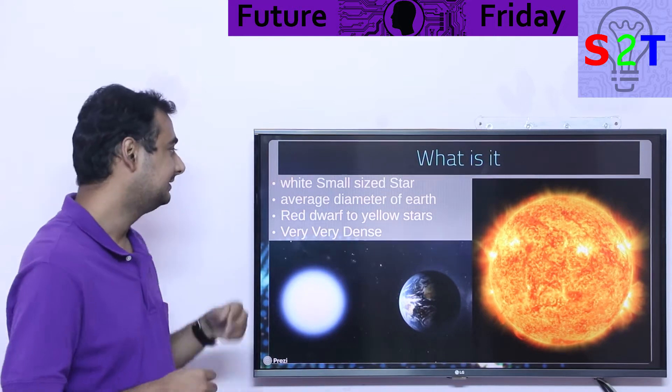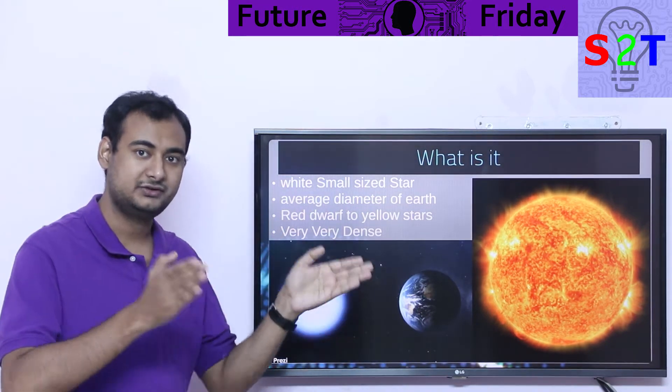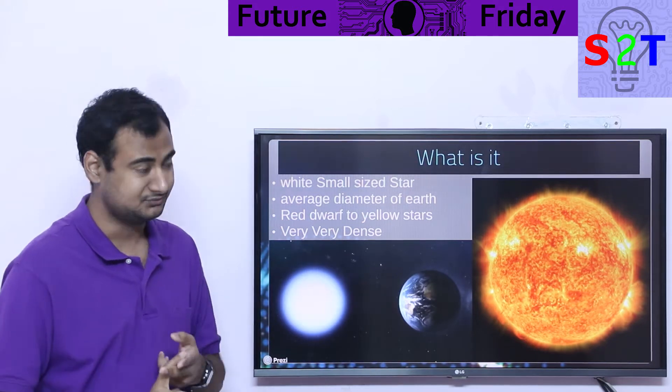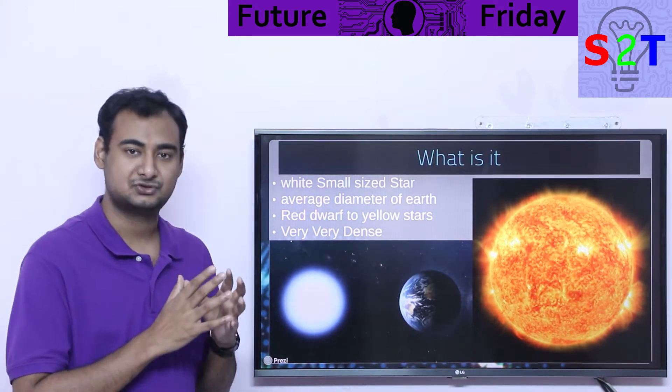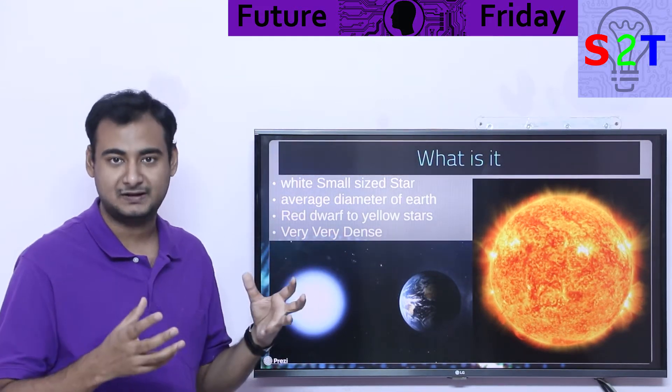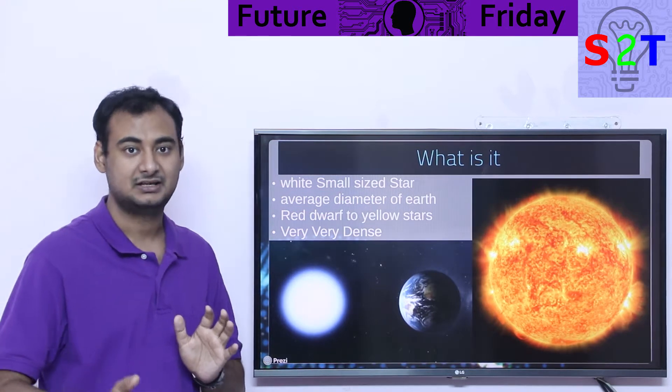So what exactly is it? We're talking about a white, small-size star - that's why it's called a white dwarf. It's white and it's very small. Generally, stars are in a different category when it comes to size. We know about moons, we know about planets, but a star is something different. It's on a different scale.